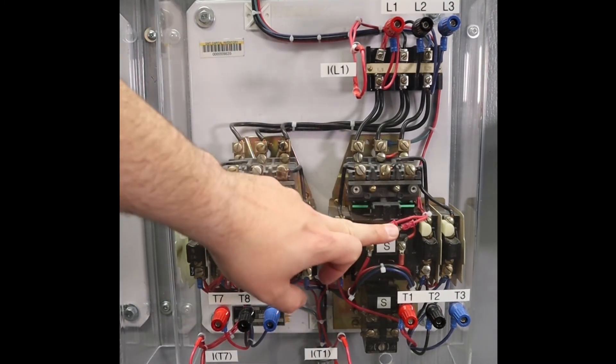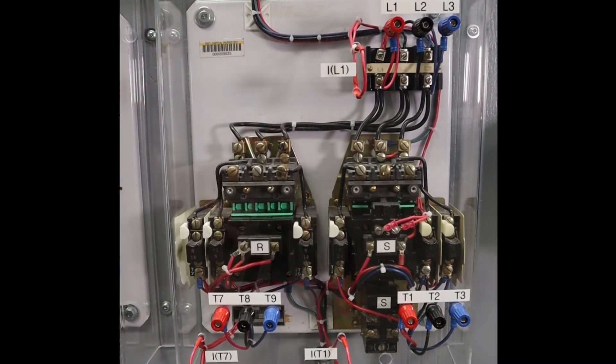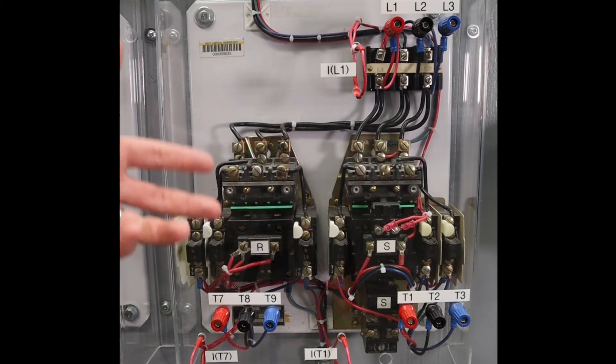is my S coil energizes, which would be running one half of the motor. After a period of time, then my R coil is going to close. Now it's energizing both halves.